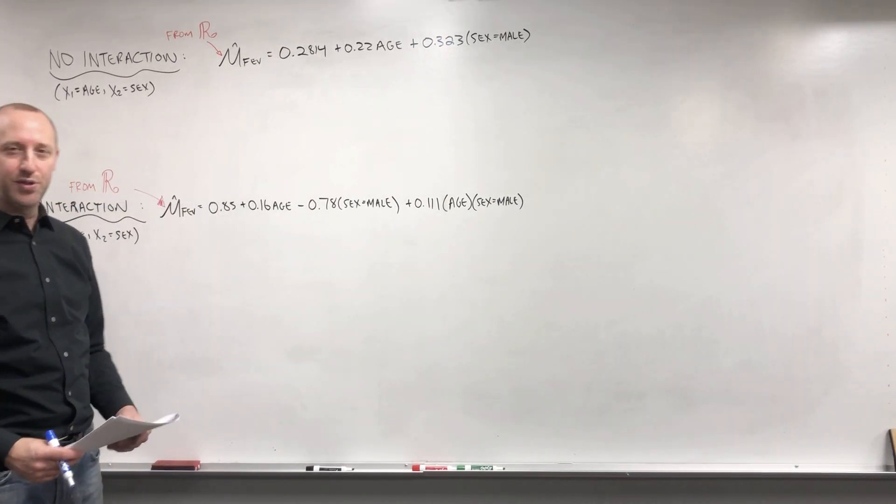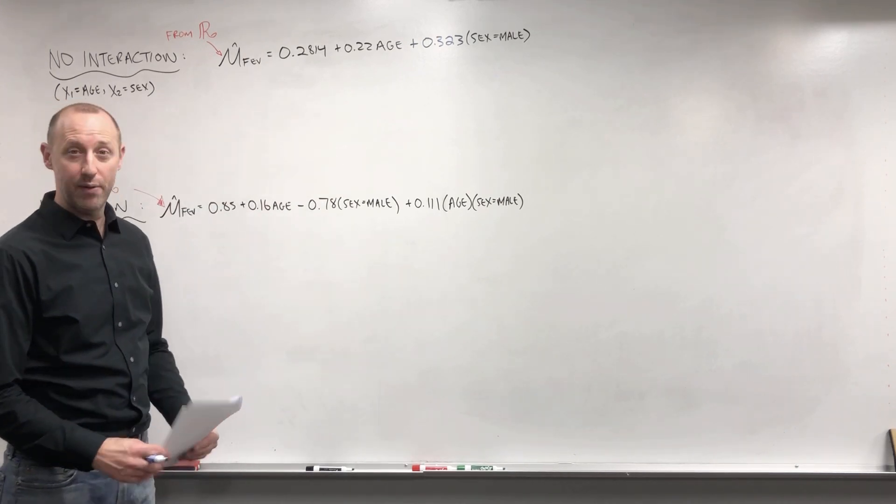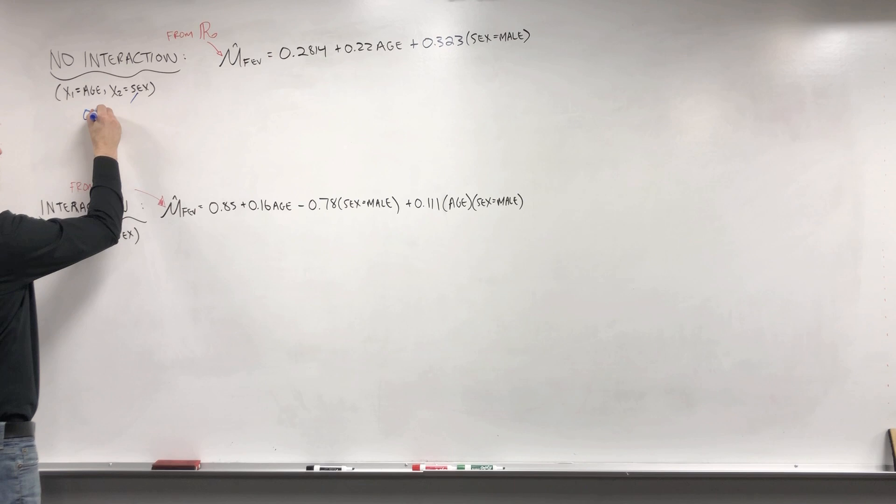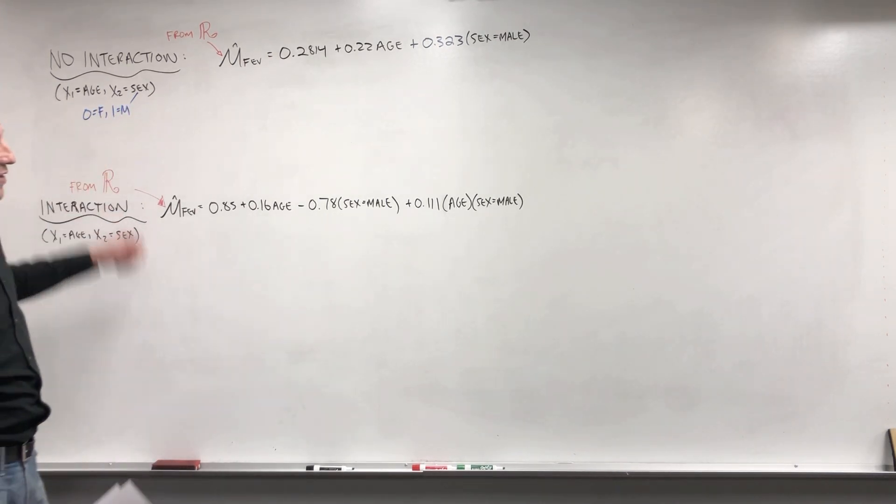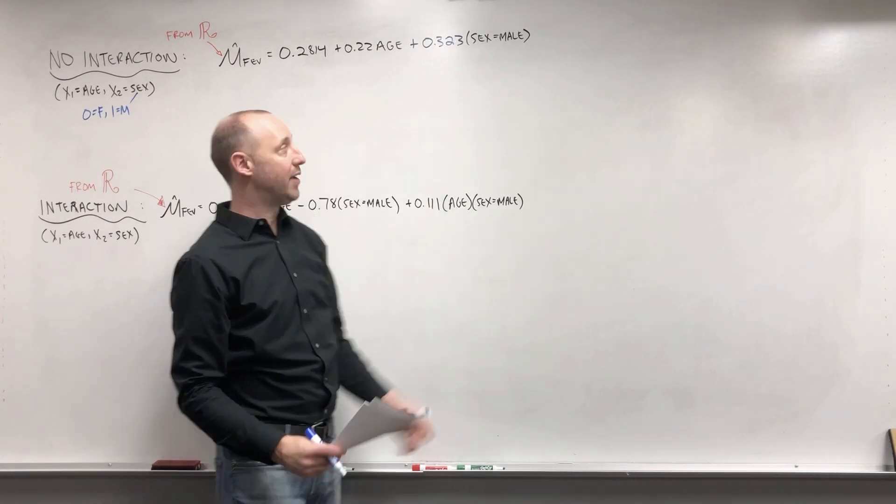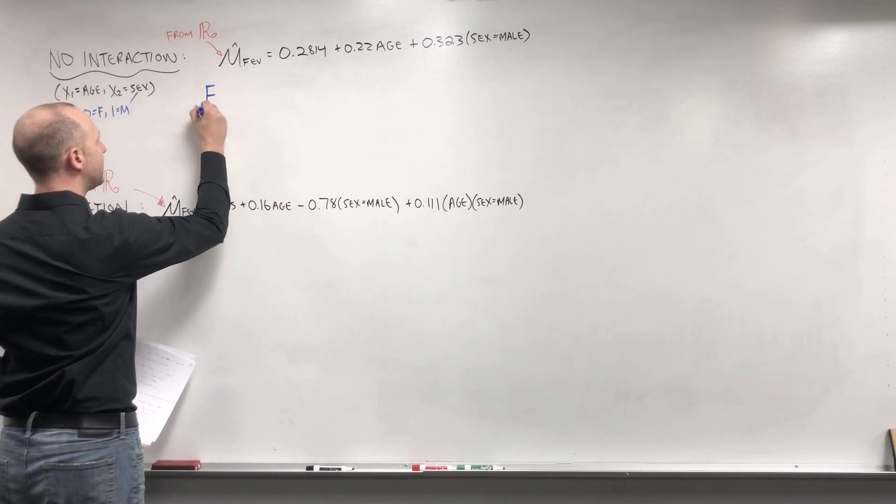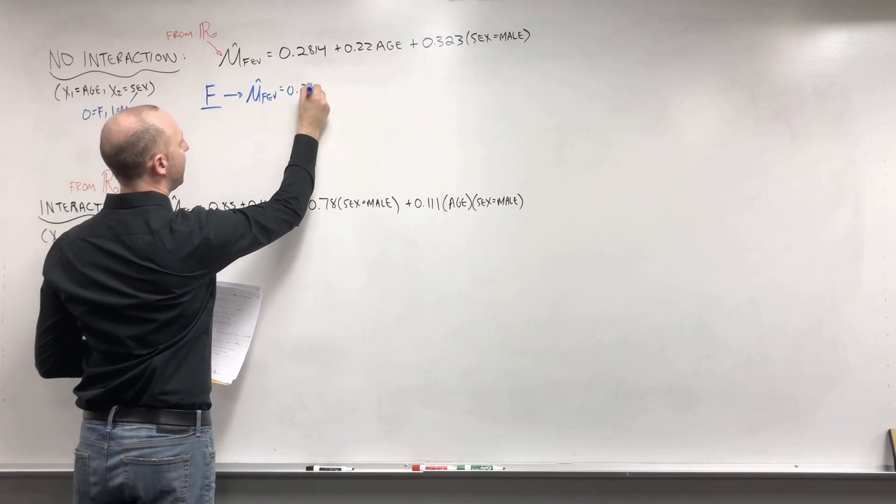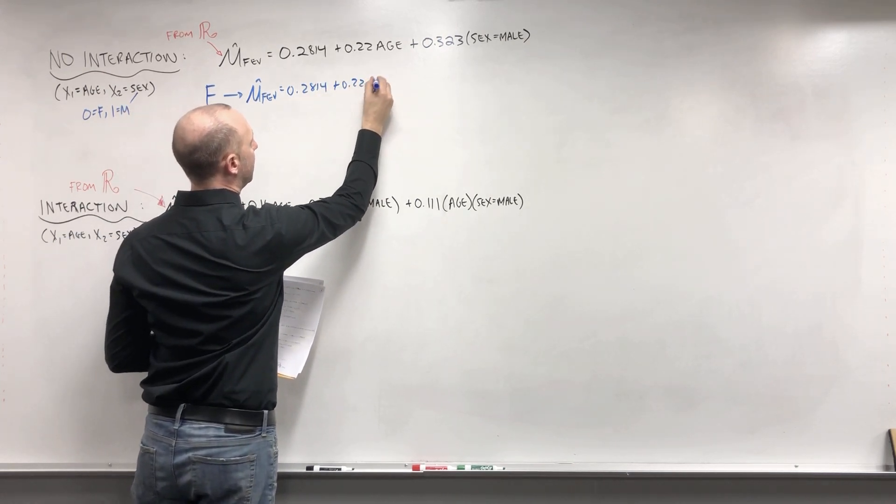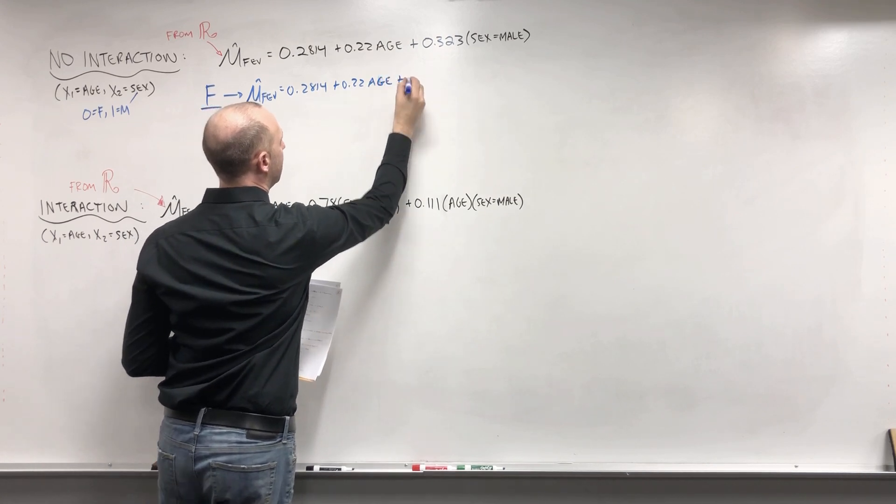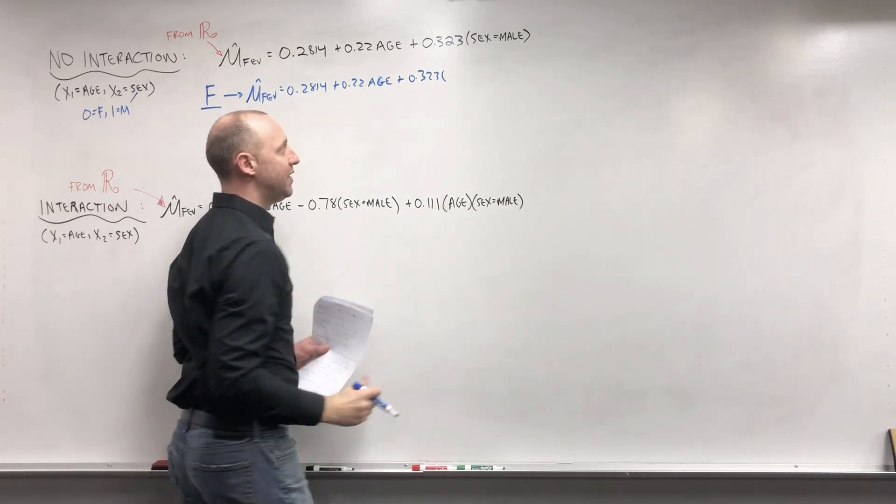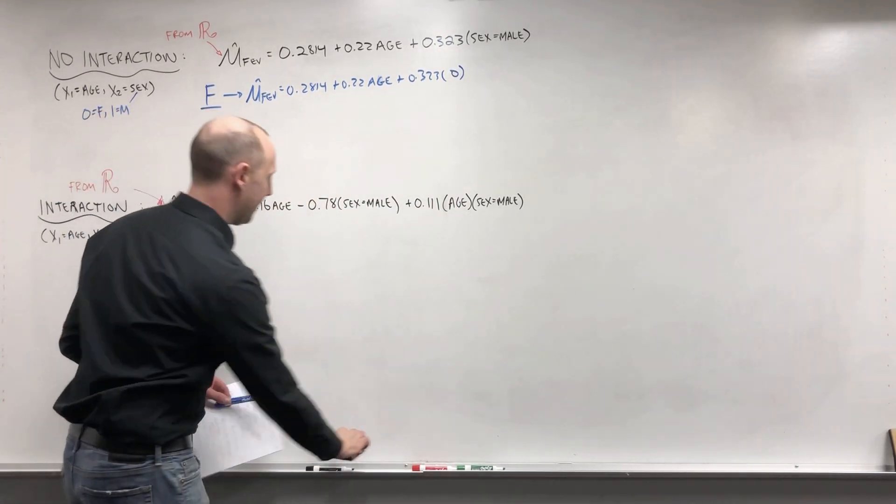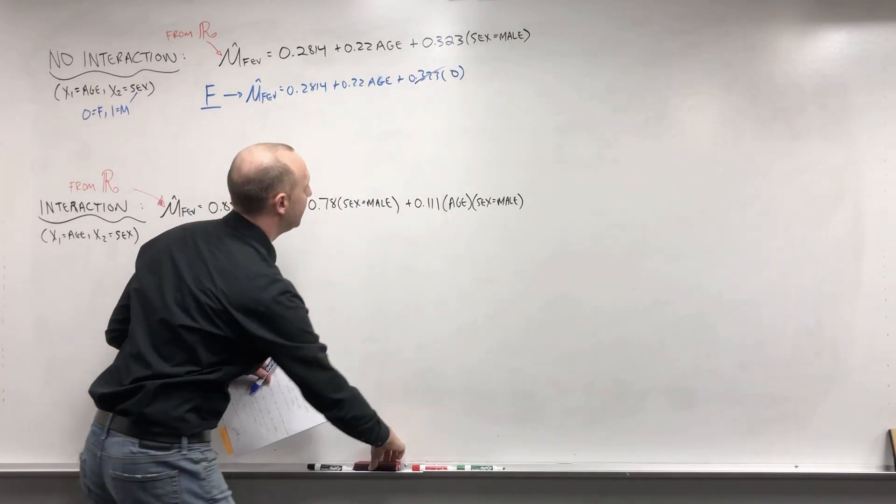We were talking about how this essentially produces two separate regression lines. So I want to show you how, using the model output, how we can produce the two lines. And I should mention here biological sex was coded as zero for female, one for male, so females being the reference, and we have an indicator if the sex is male. So first for females, the mean FEV is 0.2814 plus 0.22 times the age plus 0.323 times an indicator if sex is male. Since they're female, this is going to take on a value of 0 and that term is actually going to disappear.